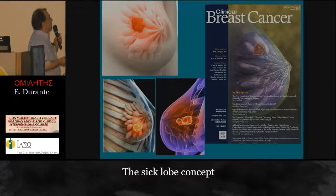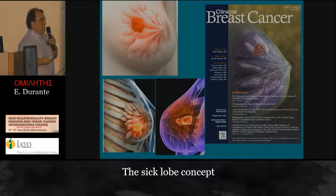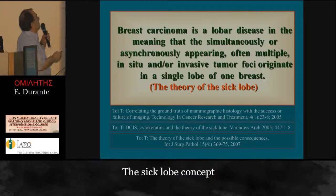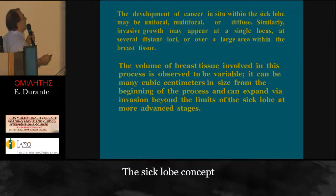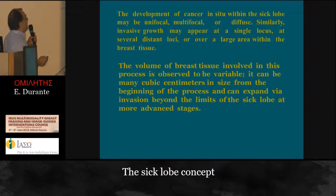Now, increasingly, the breast is imaged in terms of its lobes, even if some people do not yet recognize it. Breast carcinoma is a lobe disease in the sense that simultaneously or asynchronously appearing, often multiple, invasive tumor foci originate within a single lobe of one breast. This is the theory of the sick lobe, made by Tibor Toth. The development of cancer within the sick lobe may be unifocal, multifocal, or diffuse. Similarly, invasive growth may appear at a single locus, at several distant loci, or over a large area within the breast tissue. The volume of breast tissue involved in this process is variable — it can be many cubic centimeters from the beginning of the process and can expand beyond the limits of the sick lobe at a more advanced stage.